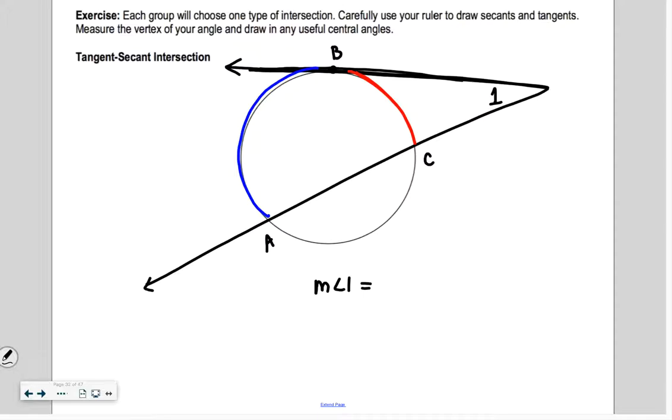The measure of angle one, very similar to that last equation I gave you. Caitlin, you with me? It's going to be one half instead of the sum though. It's going to be the difference. Half of the difference. I'll call it BC, AB minus BC.